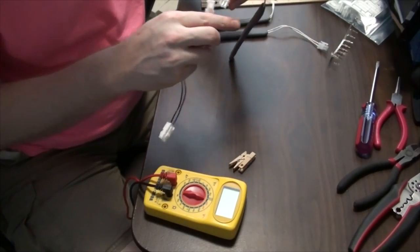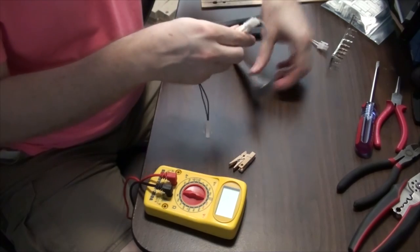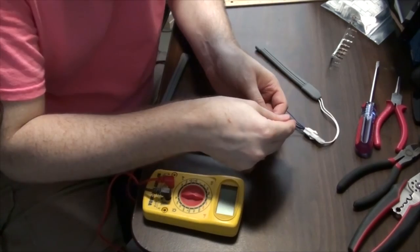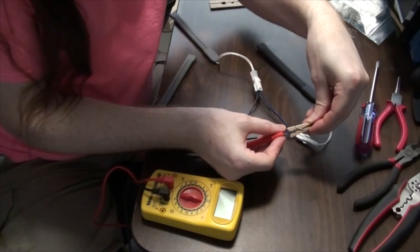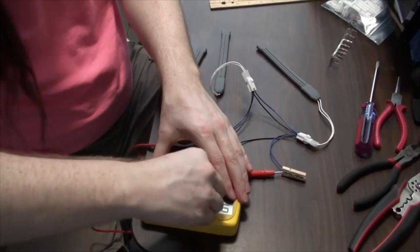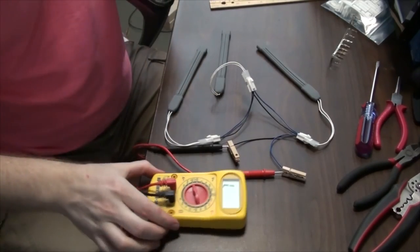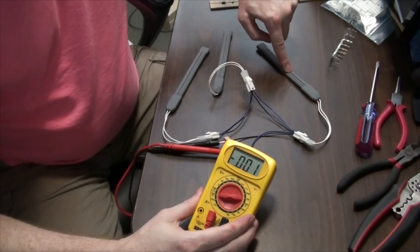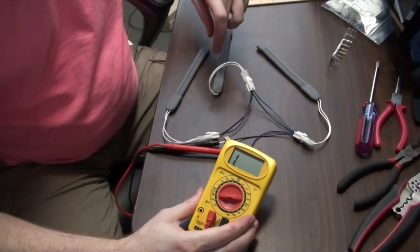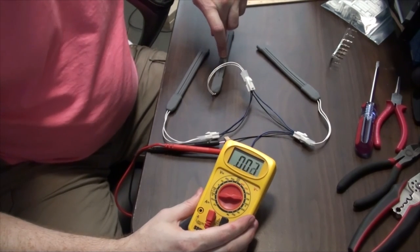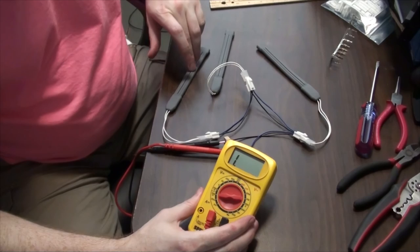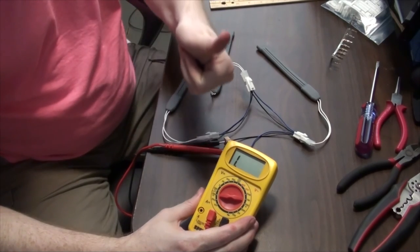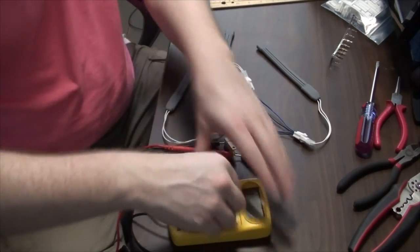So just to verify that this all works, plug in three sensors, connect a voltmeter. Clothespins were the best tool I had for this. They worked. They were a little awkward, but they did the job eventually. Push. Works. Push. Works fine. Push. Works fine. Cool. So that's the wire harness.